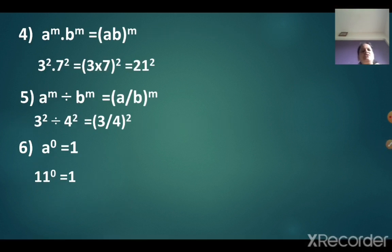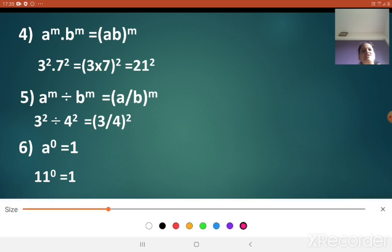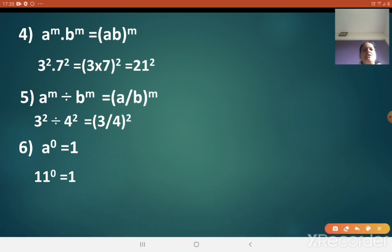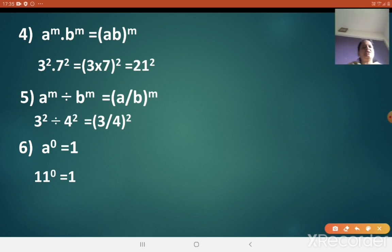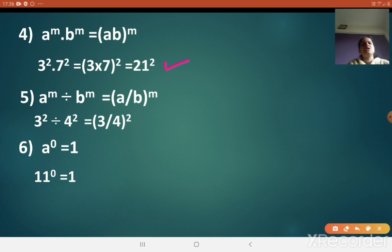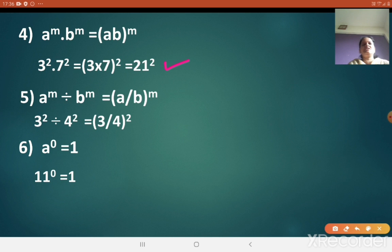The fourth law: a raised to m into b raised to m. Here the bases are different but the index is the same. So a raised to m into b raised to m equals a b raised to m. For example, 3 squared into 7 squared equals 3 into 7 raised to 2, which is 21 squared. Generally, whenever the index is 2, we use the word 'square' instead of 'raised to 2'.